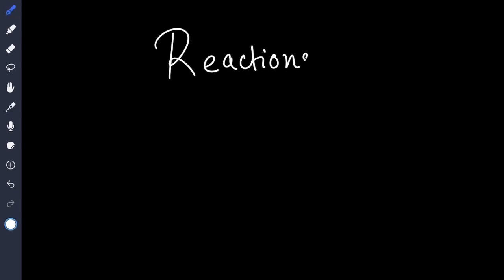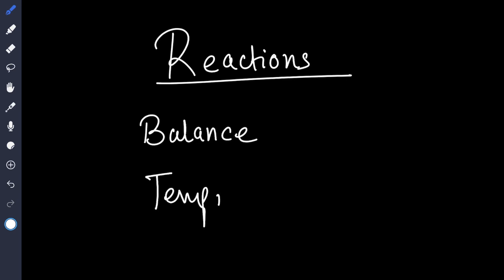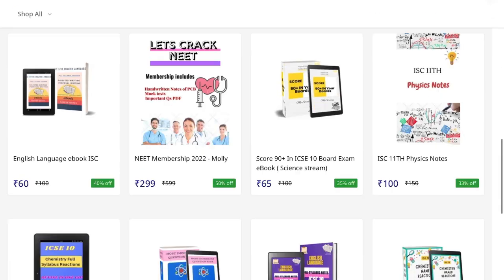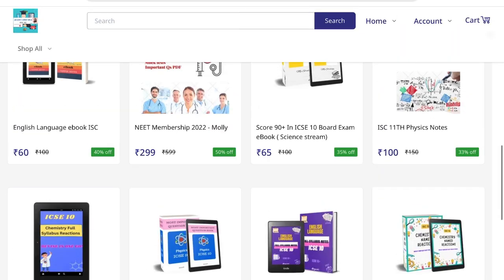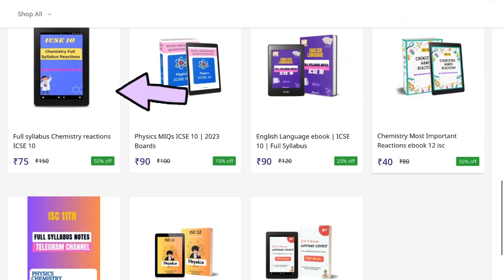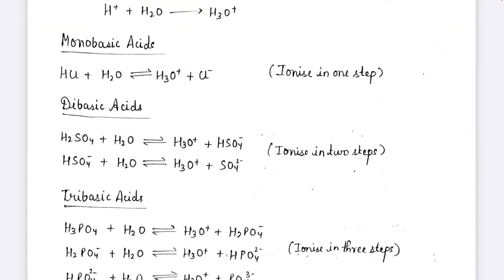Reactions in chemistry are very important. You have to balance the reactions and also mention the catalyst, the temperature, color, wherever required.